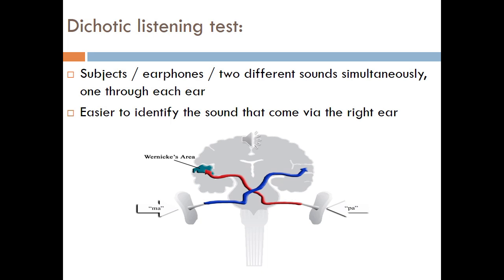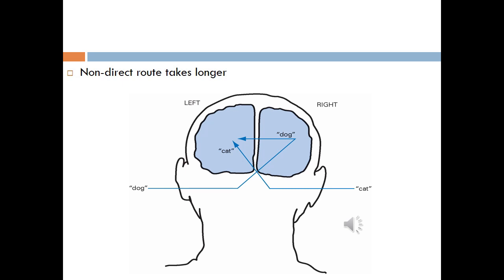Another concept discussed in this chapter is called the dichotic listening test. It is an experimental technique that has demonstrated left hemisphere dominance for syllable and word processing. This technique uses the established fact that anything experienced on the right-hand side of the body is processed in the left hemisphere, and vice versa. This diagram explains the dichotic listening test.